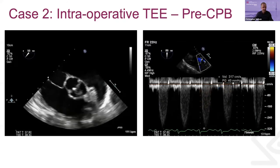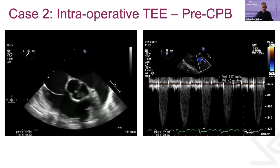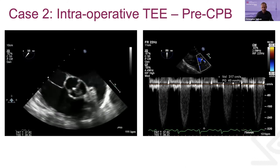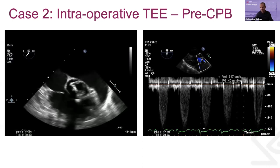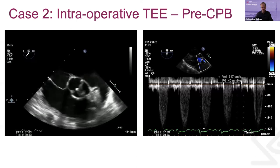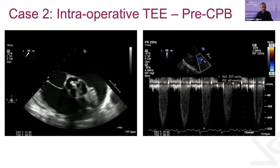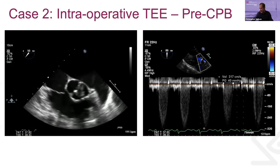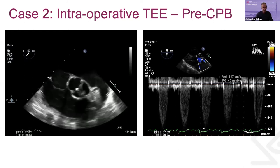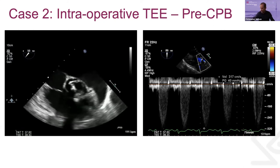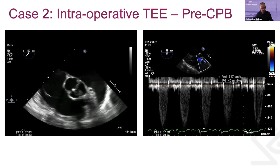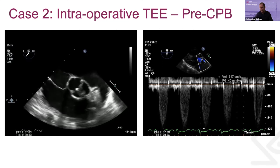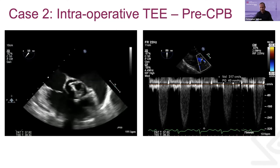Looking at the aortic valve in short axis, this is a very tight valve. This would be what was discussed earlier — a unicuspid aortic valve, extremely rare. About 5% of patients with AS who come in for aortic valve surgery have this, but in the general population it's closer to 0.02%. It can have one commissure or more, and patients with a unicuspid valve typically present early in life with aortic stenosis; it is also associated with dilatation of the aorta. On the right-hand side, we see a peak gradient of 40 and a mean gradient of 20 when that curve is traced.